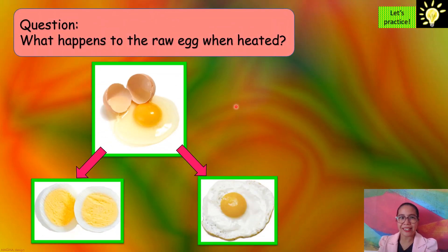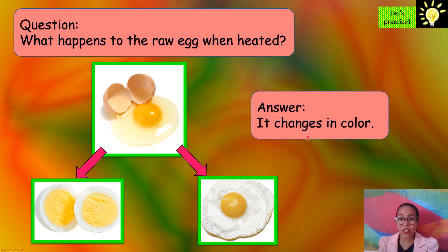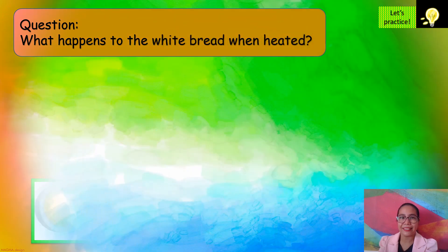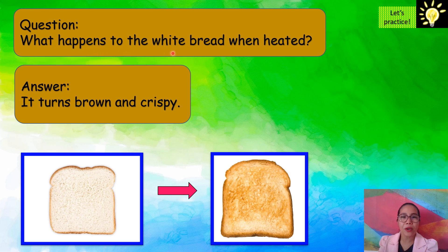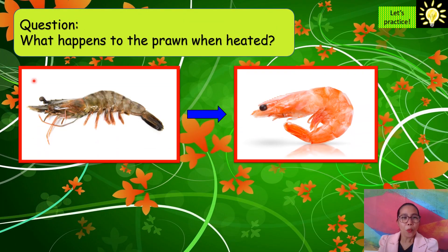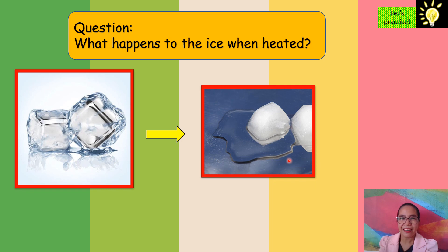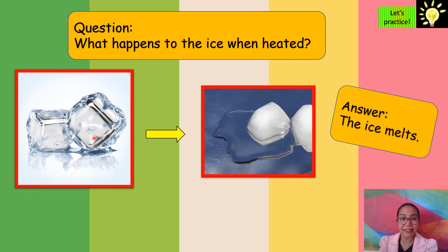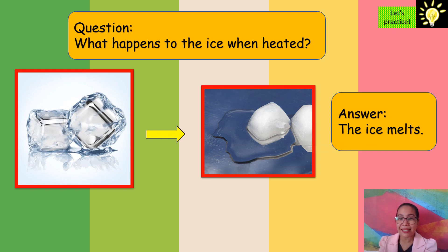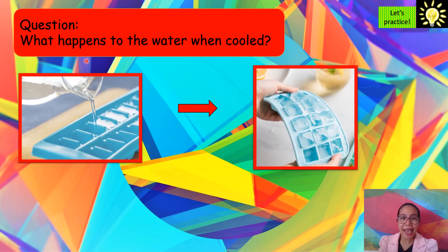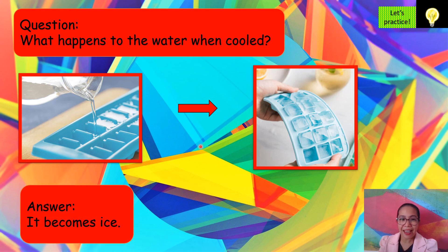Let's try to answer these questions. What happens to the raw egg when heated? It changes in color. What happens to the bread when heated? It turns brown and crispy. What happens to the raw prawn when heated? It changes in color. What happens to the ice when heated? The ice melts. What happens to the water when cooled? It becomes ice.